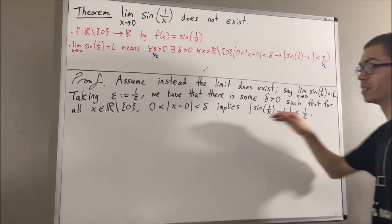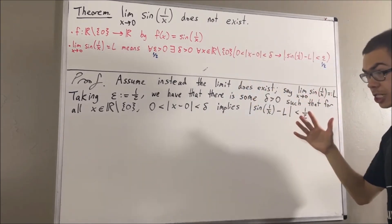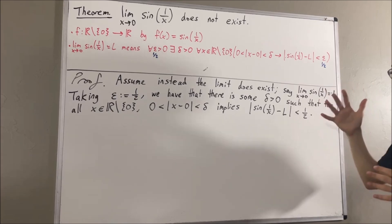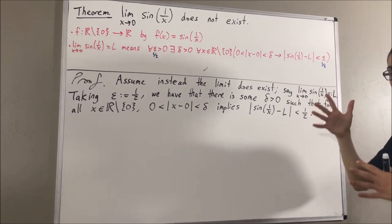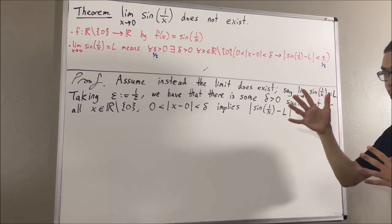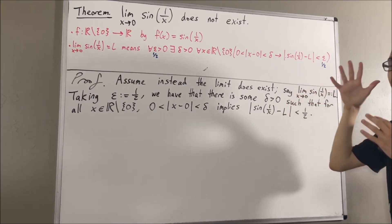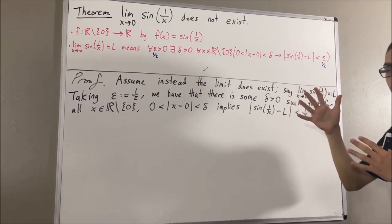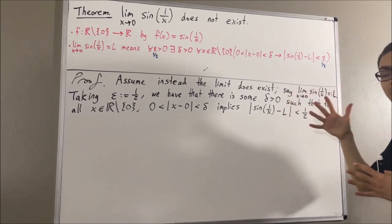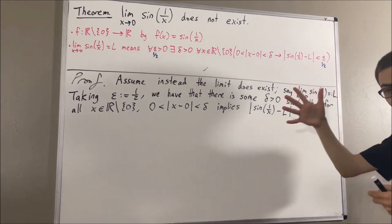We're going to use this fact to help us reach a contradiction. To proceed further, we're going to use a property of the real numbers which is sometimes called the Archimedean property. It says: for every positive real number y, there exists a positive integer k such that one over k is less than y.